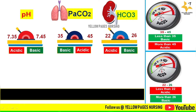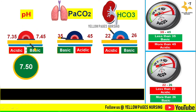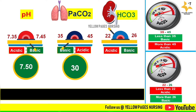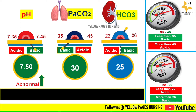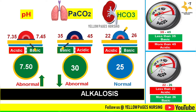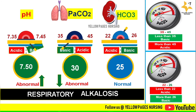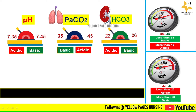Next example: pH is 7.50, PaCO2 is 30, and bicarbonate is 25. pH above the normal range indicates alkalosis. PaCO2 is below the normal level at 30, indicating basic. Bicarbonate is within normal range. We conclude the ABG is respiratory alkalosis, since there is abnormality with pH and PaCO2 — basic along with basic.